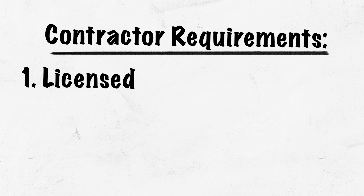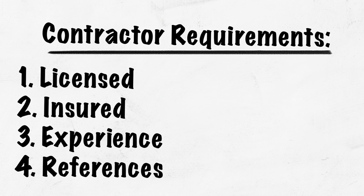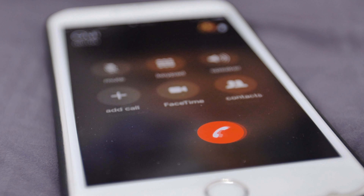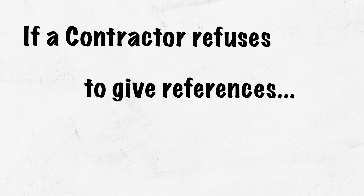There are several things with the contractor that you need to make sure they have. Number one, licensure in the jurisdiction where they're working. Insurance. They need to have experience in the type of project you want constructed. And then also references. Owners should be able to contact those references and check how satisfied they were with the work, how fast the contractor was, and whether he did what he promised.